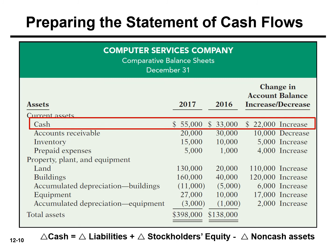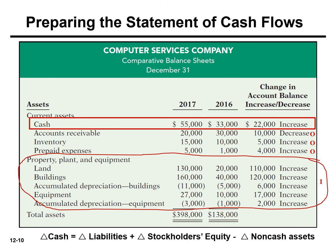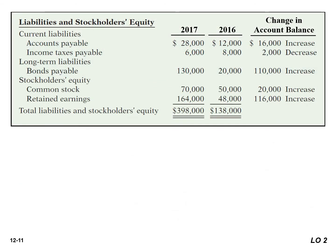Current assets such as accounts receivable, inventory, and prepaid expenses result from our ongoing operations, so think of these as operating activities. Property, plant, and equipment represents an investing activity — whether we purchase or sell equipment, these are considered investing activities. The current year depreciation expense will increase accumulated depreciation, and this account will decrease when a sale occurs, such as a piece of equipment. For current liabilities, accounts payable and income tax payable also result from ongoing operations and are considered operating activities.